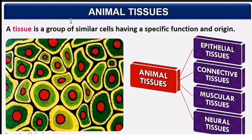Epithelial tissues form the outer layer. Connective tissues are gel-like or fiber-like and function in connection. Muscular tissues relate to muscle function, and neural tissues are associated with the brain.